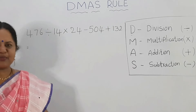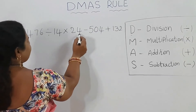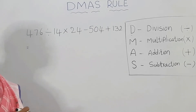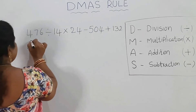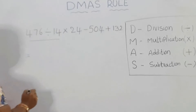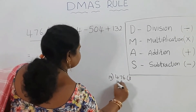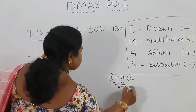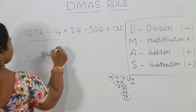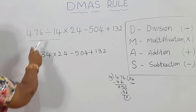Look here. Here we have one more example: 476 divided by 14 into 24 minus 504 plus 132. We have to solve this problem according to DMAS rule. First, division: 476 divided by 14.